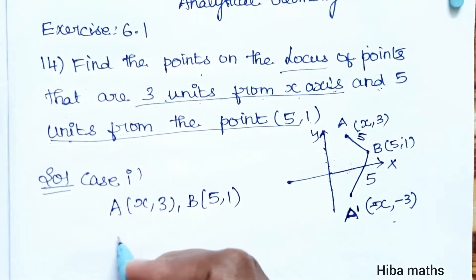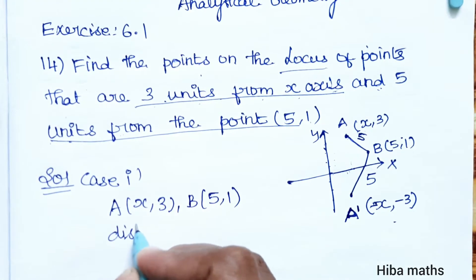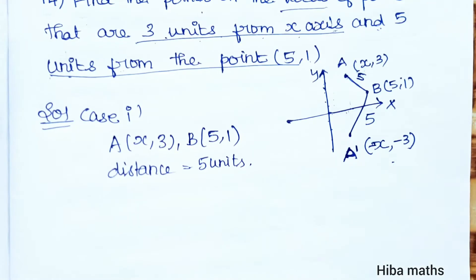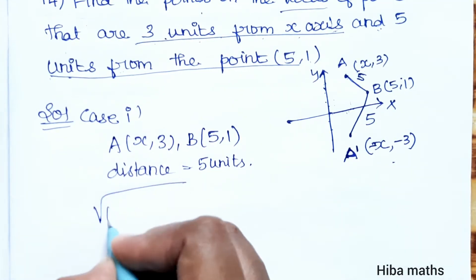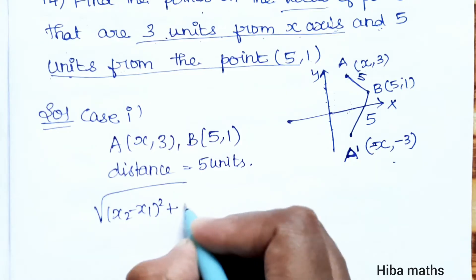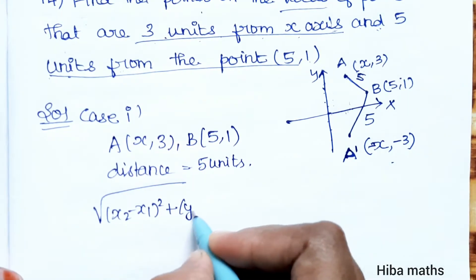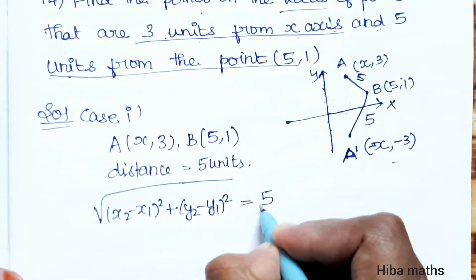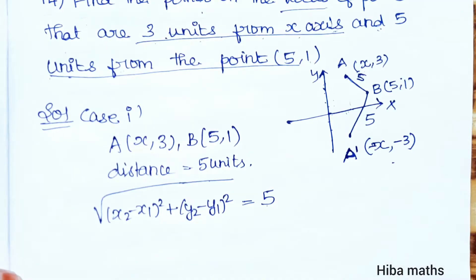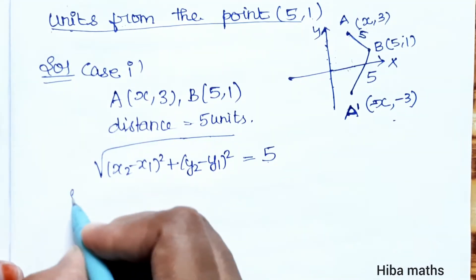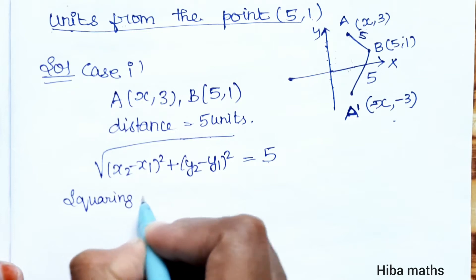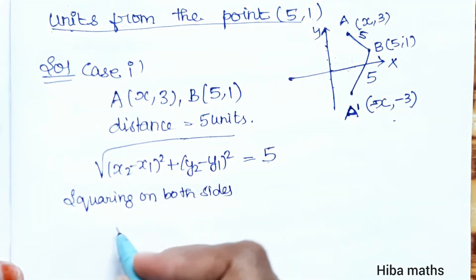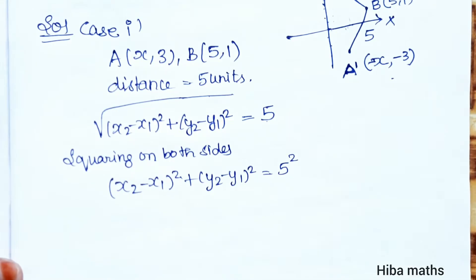Point E is (5, 1) and the distance between them is 5 units. The distance formula is: square root of (x2 minus x1) whole square plus (y2 minus y1) whole square, and that equals 5. Squaring on both sides, the square root cancels and 5 squared is 25.